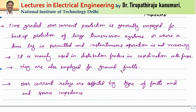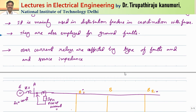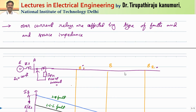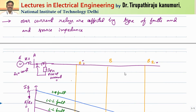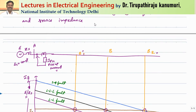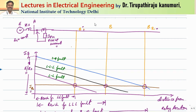These overcurrent relays are also employed for protection against ground faults. The main reason we do not use overcurrent relays for long transmission lines is that they are affected by the type of fault and the source impedance. Whenever the system capacity is increased, you have to change the settings or replace the overcurrent relay. That is the first disadvantage. The second disadvantage is they are affected by the type of the fault, so we cannot fix the value of the current very easily.